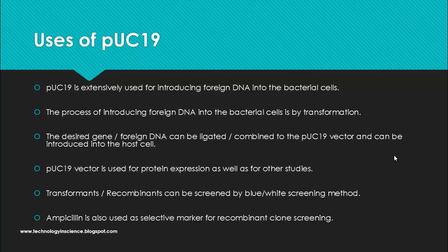PUC19 is extensively used for introducing foreign DNA into bacterial cells. This whole process is called transformation, where the plasmid is introduced into the bacterial cell by making small pores in the bacterial cell wall using a heat shock method, followed by sudden cooling to seal the pores.